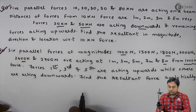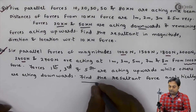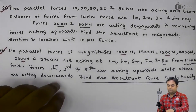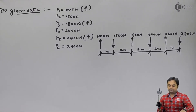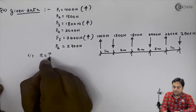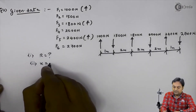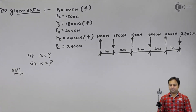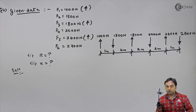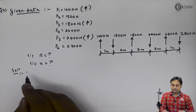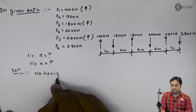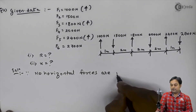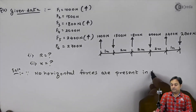The question asks us to find the resultant force analytically. We need to calculate the resultant, its magnitude, direction and location. Since there are no horizontal forces present in this force system, we begin by finding the resultant R as the summation of all vertical forces.